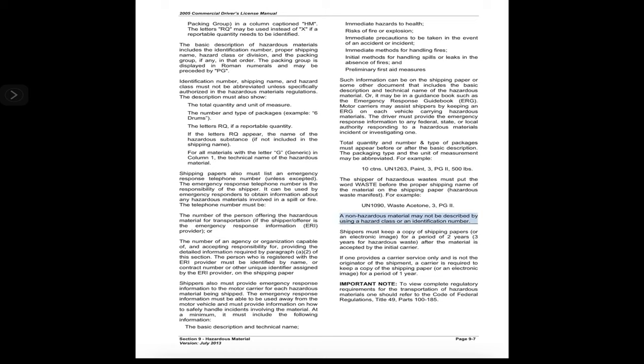Emergency response information must be kept in the same location as the shipping paper. Section 9.6.11: Papers for Division 1.1, 1.2, or 1.3 Explosives. A carrier must give each driver transporting these explosives a copy of Federal Motor Carrier Safety Regulations (FMCSR) Part 397 and written instructions on what to do if delayed or in an accident. The written instructions must include names and telephone numbers of contacts including carrier agents or shippers, the nature of the explosives transported, and precautions to take in emergencies such as fires, accidents, or leaks.